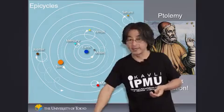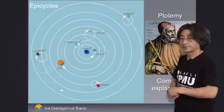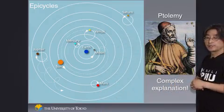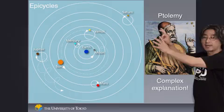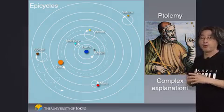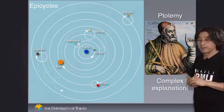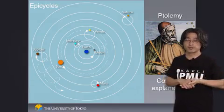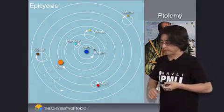But as you can see, this is getting pretty complicated. And as the observation got better and better, even this idea didn't work anymore. So they started putting another epicycle on top of an epicycle and so on and so forth. And it got more and more complex. And at some point, people realized that this is just way too complex. The universe should have a simple understanding. This can't possibly be right.